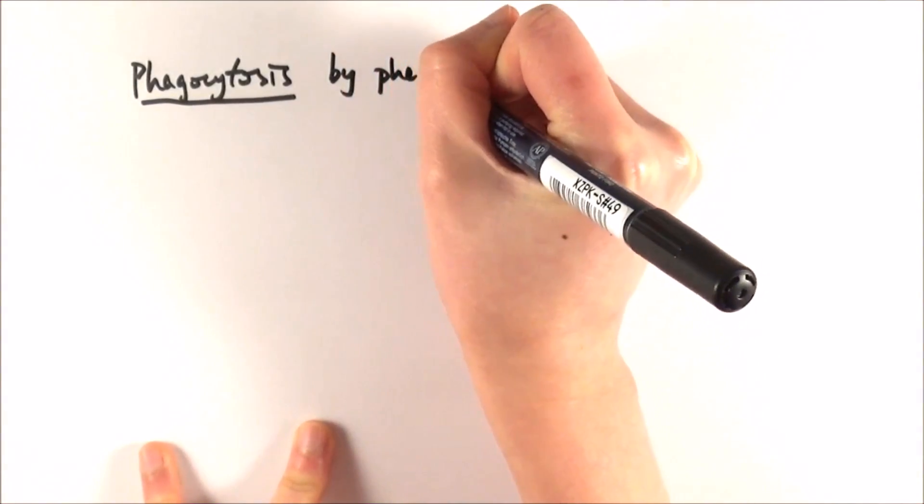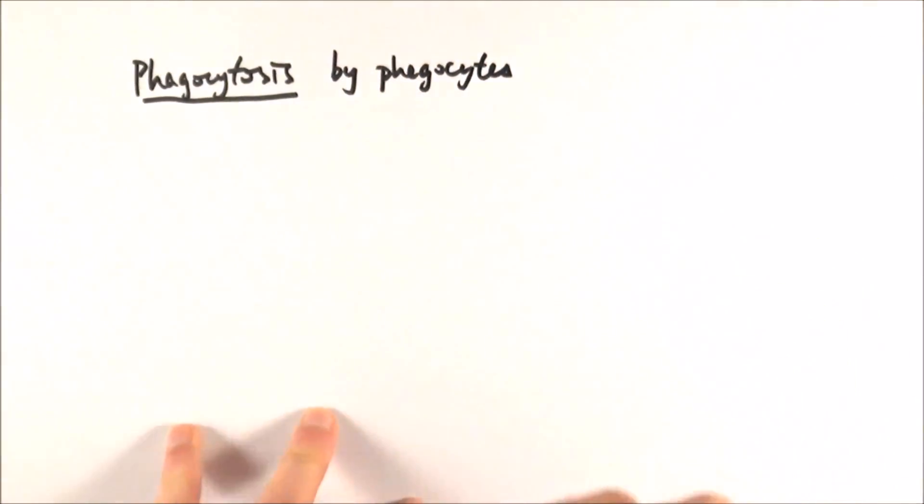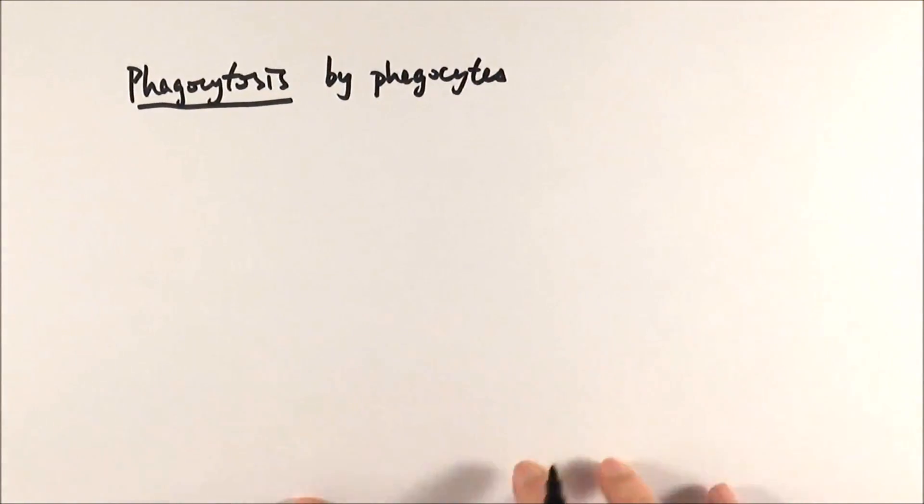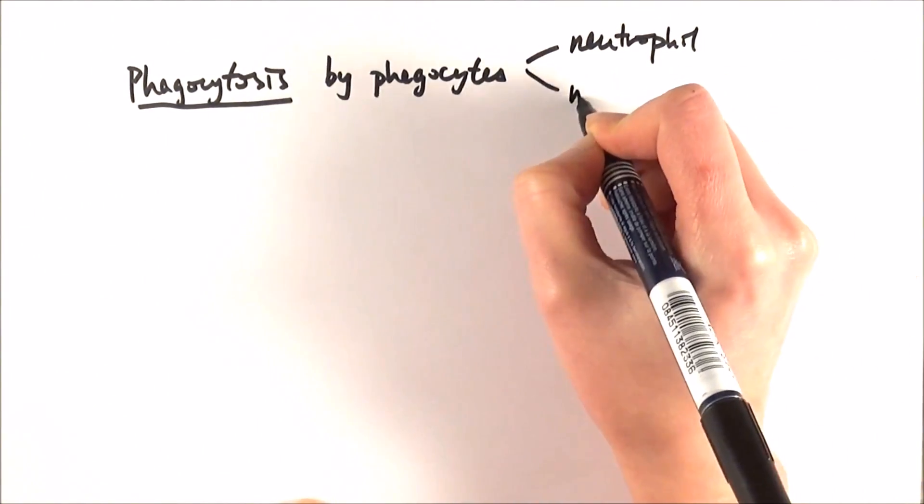Now, phagocytosis are done by white blood cells called phagocytes, and there are two specific types of phagocytes that you need to know. One is called neutrophil, and the other one is called macrophage.